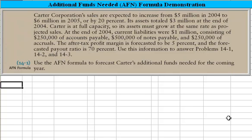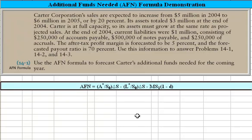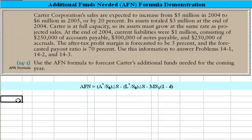This is based on the AFN formula — let me copy that in so we have it in front of us. There are various elements: A* divided by S0 is the ratio of expected assets to current sales, multiplied by the change in sales. Then we subtract the spontaneous liabilities — L* divided by S0 — which is the ratio of spontaneous liabilities to sales, times the change in sales. From there we subtract the profit margin times future sales, multiplied by 1 minus the dividend payout amount.